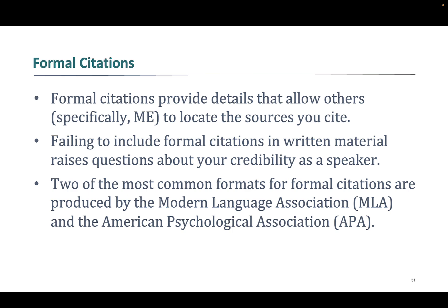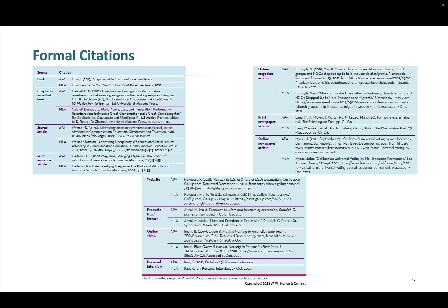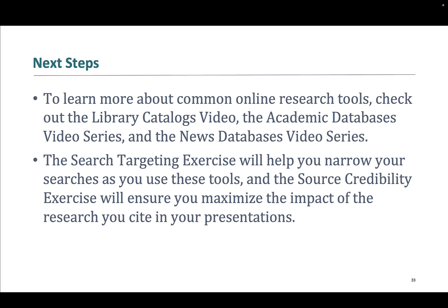Two of the most common formats for formal citations are produced by MLA, the Modern Language Association, and APA, the American Psychological Association. I don't care if you use MLA or APA as long as you're consistent. Here are a couple of examples of the most common kinds of written bibliographical source citations. We also have examples in Canvas and on the library website, and these are from your book. There are lots of resources to go along with this chapter, and I'll post links underneath the video.